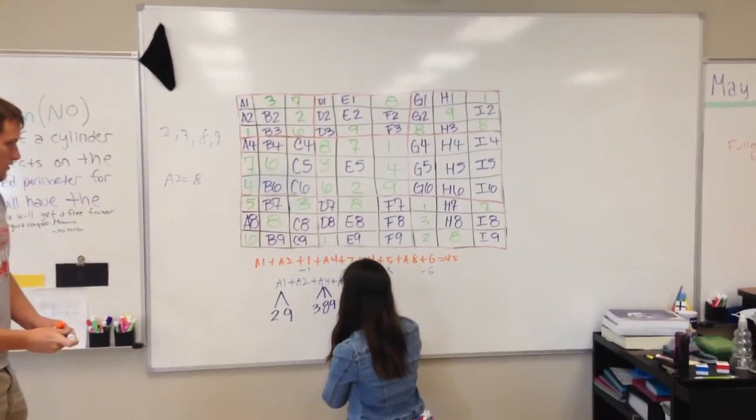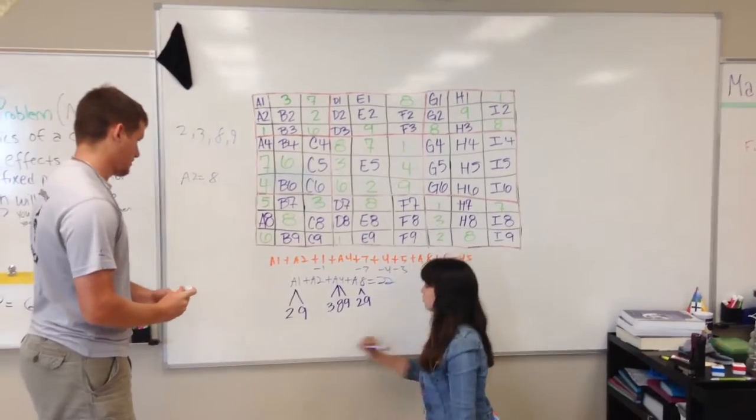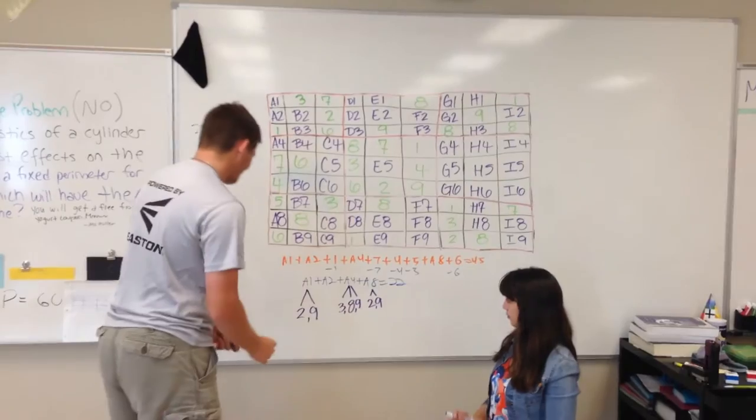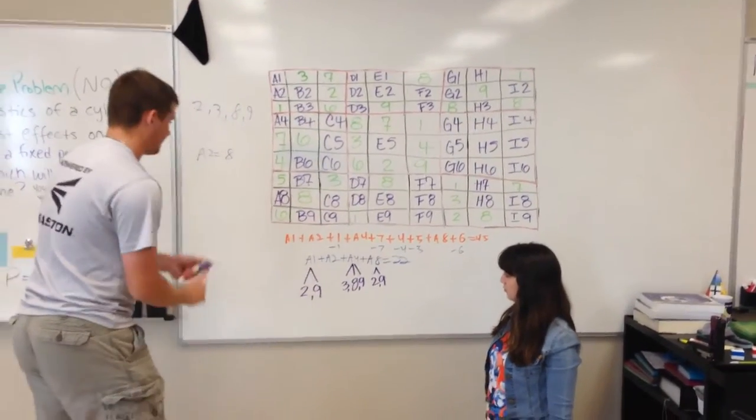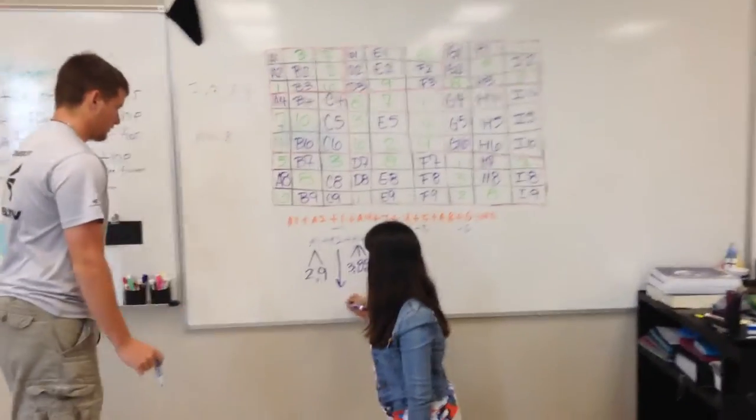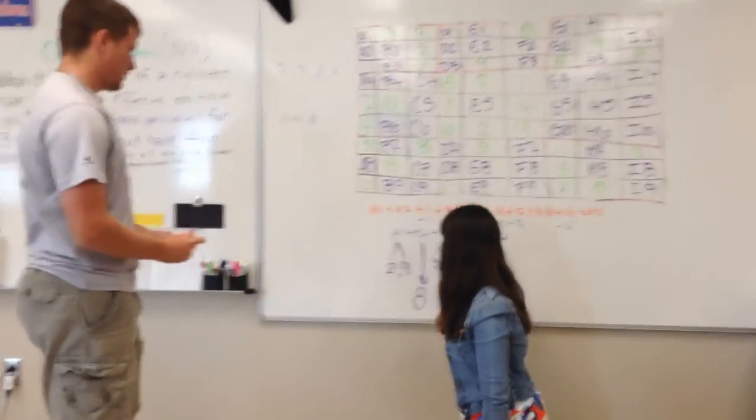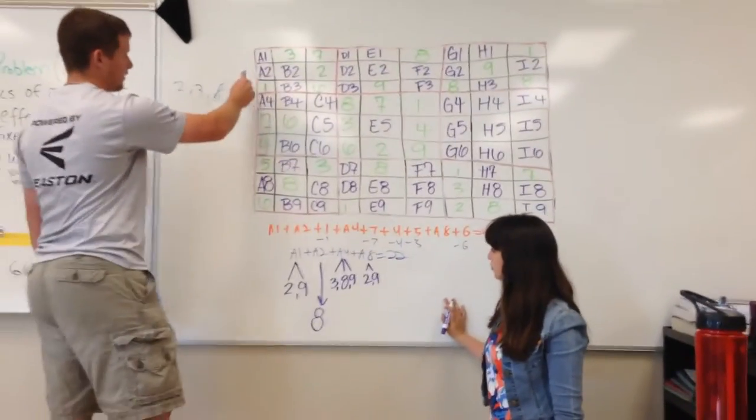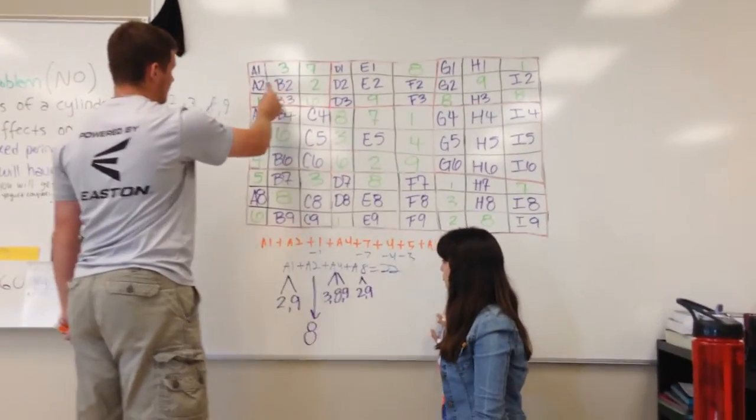So from there, you would know, so A2 equals 8. So now we need 2, 3, and a 9, so A1 has a 3.